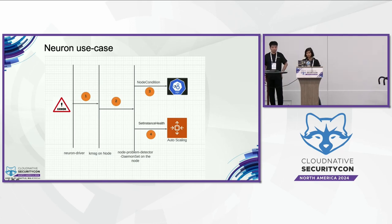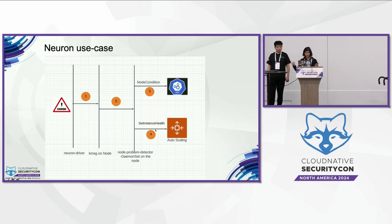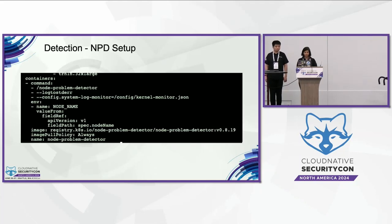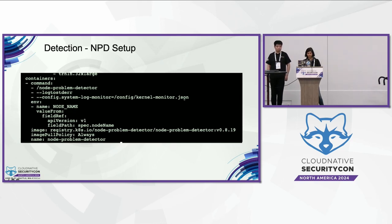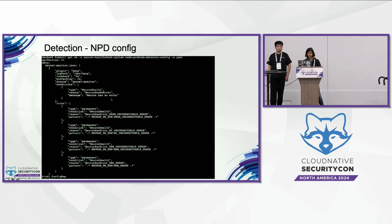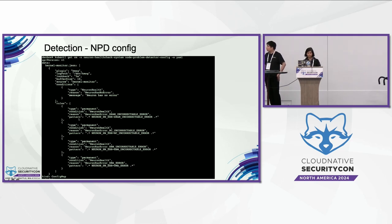Additionally, in our case, we are also calling set instance health to indicate to ASG that this instance is not healthy anymore. This is part of the daemon set YAML for NPD. We are running the upstream image as-is and configuring it with a config file — the ConfigMap we mount — using the system log monitor sub-daemon. This is the set of regular expressions corresponding to our case study, which you can modify to fit your needs. This is how you define the node condition; in our case, we've called it neuron health. We're defining only permanent conditions here, four of them, and watching kernel message with a look-back of five minutes.